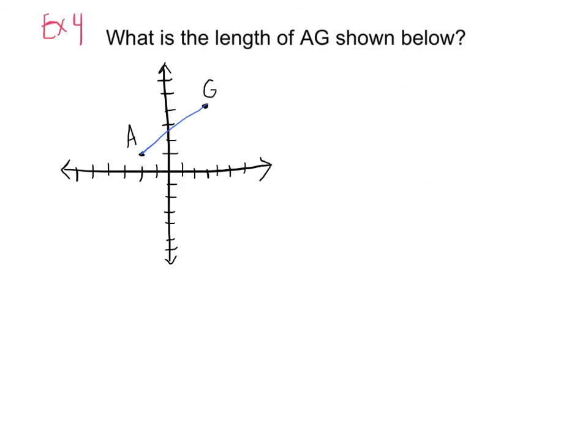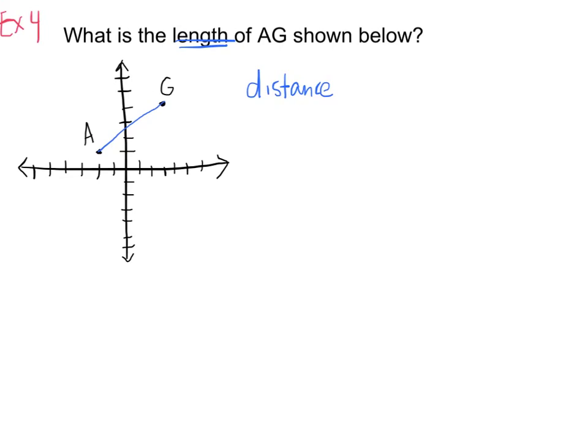Now for our last example. For this question they're asking, what is the length of AG shown below? First, the first thing I notice is that they're asking me for the length, and the length, I know, is the same as the distance. So I'm going to have to use the distance formula. The distance is the square root of the sum of the differences of the x values and the y values squared. So I need two points in order to use this formula.